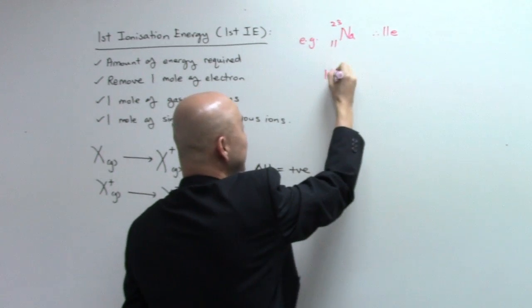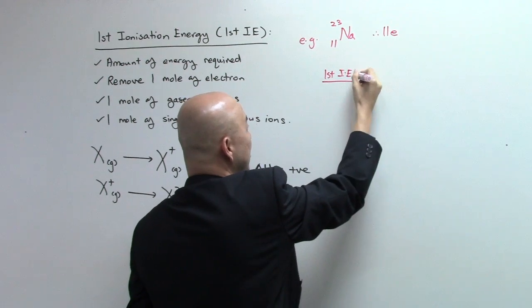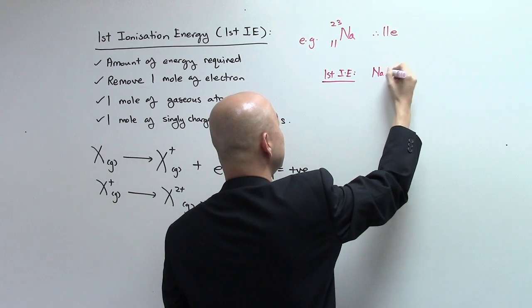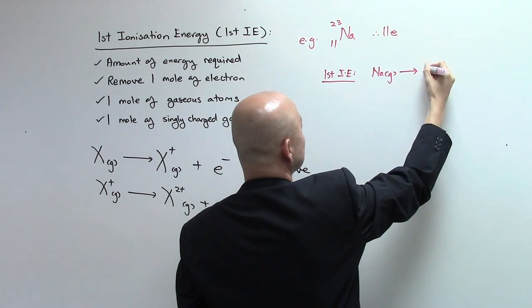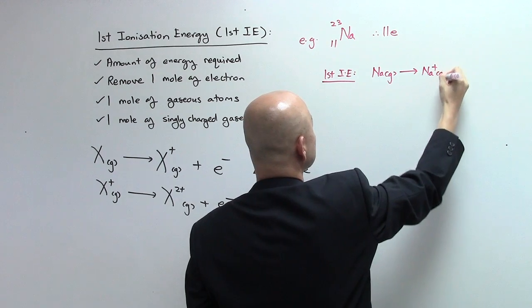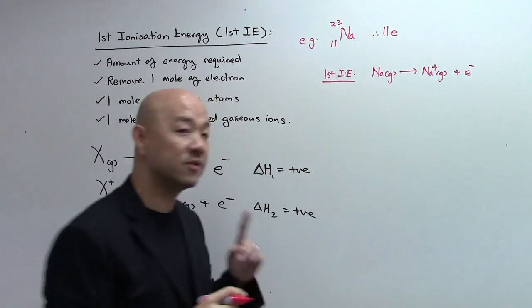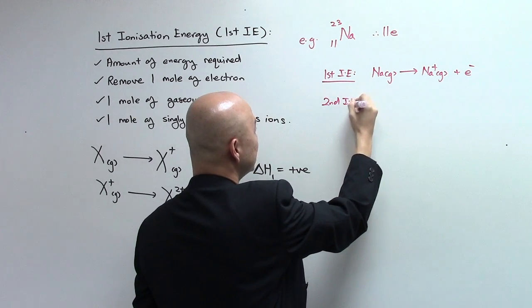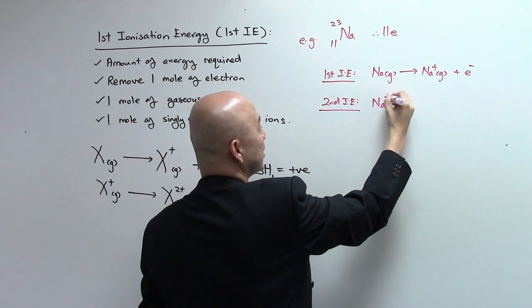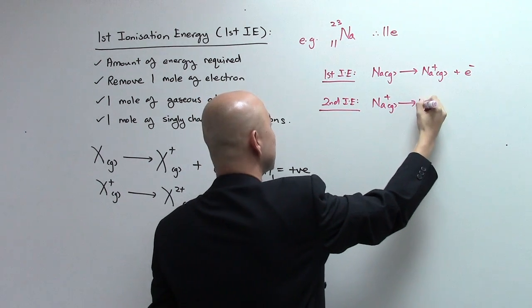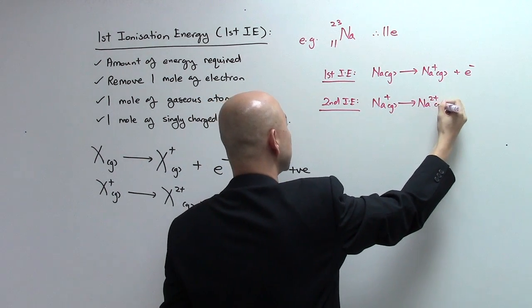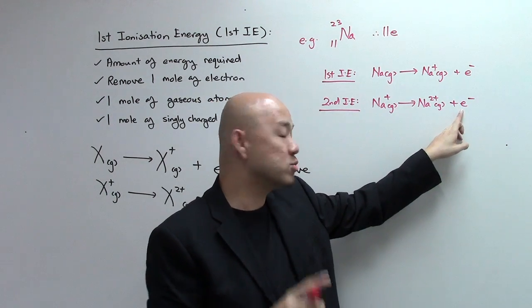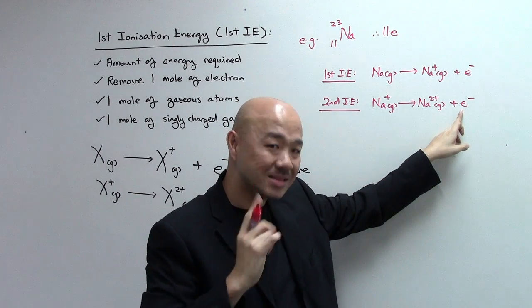So, if I write the first IE of sodium, it will then be Na gaseous gives you Na+ gaseous, and one mole of electrons. This is your first IE. And when you write your second IE, it will then be Na+ gaseous becomes Na2+ gaseous and electrons. Always remember that you can only remove one mole of electrons each time.